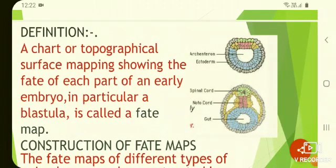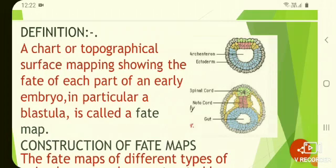Since the blastomeres are more or less similar in appearance, the fate or end result of each blastomere can only be ascertained by certain special devices. As a result, the blastula can be marked into different areas, each developing into a particular organ or organ system.